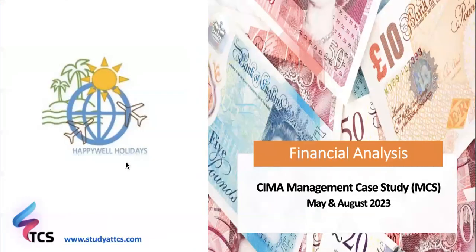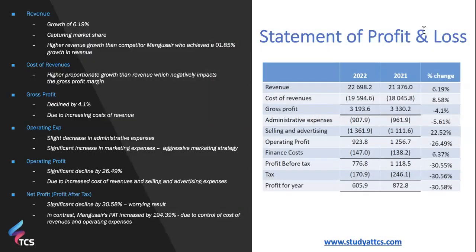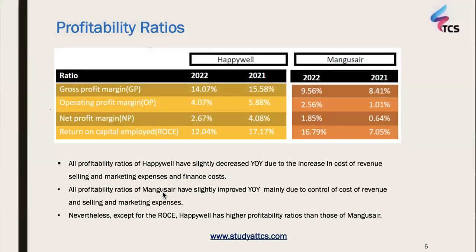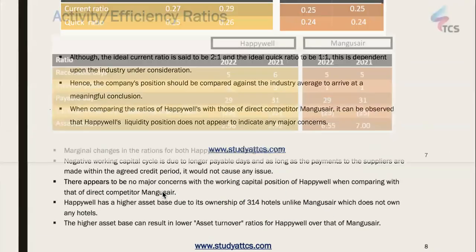Let me quickly show you the financial analysis slides we have developed for a previous case study. At the very end of the pre-seen document, the examiner provides you with financial information of your company Kafka as well as its closest competitor. Based on these financial statements, you're supposed to conduct your own evaluation — but rather than asking you to do that, we have made your life easy by coming up with this evaluation. We've kept things simple so you can easily understand the financial performance and what appears within each financial statement. Similarly a statement of financial position evaluation has been carried out, and at the very end a ratio analysis comparing each ratio between your company and its closest competitor.